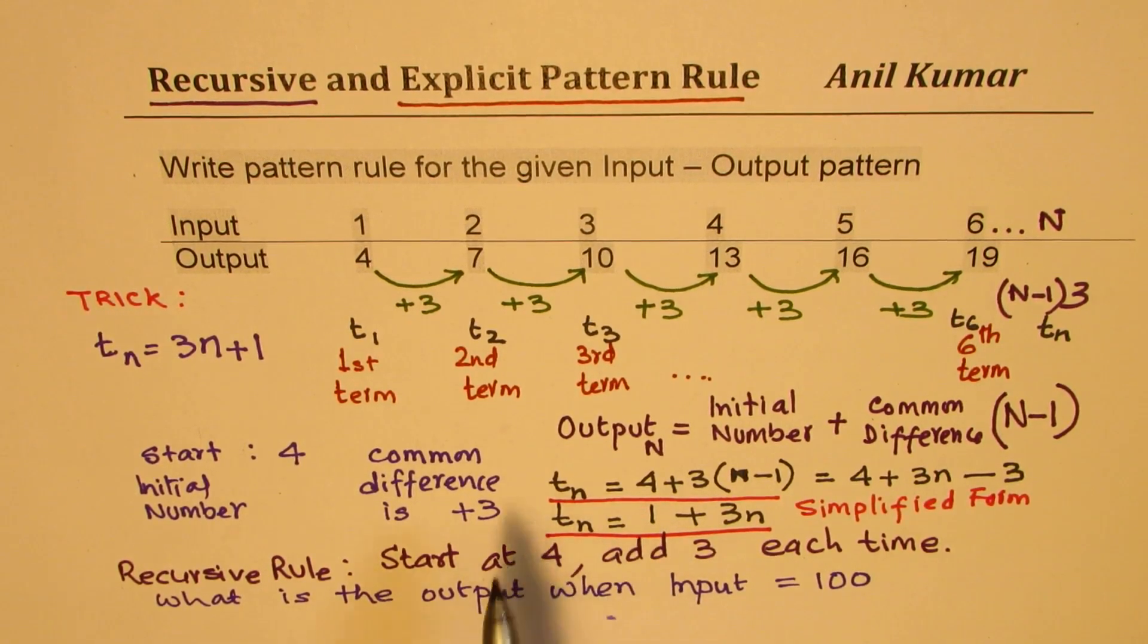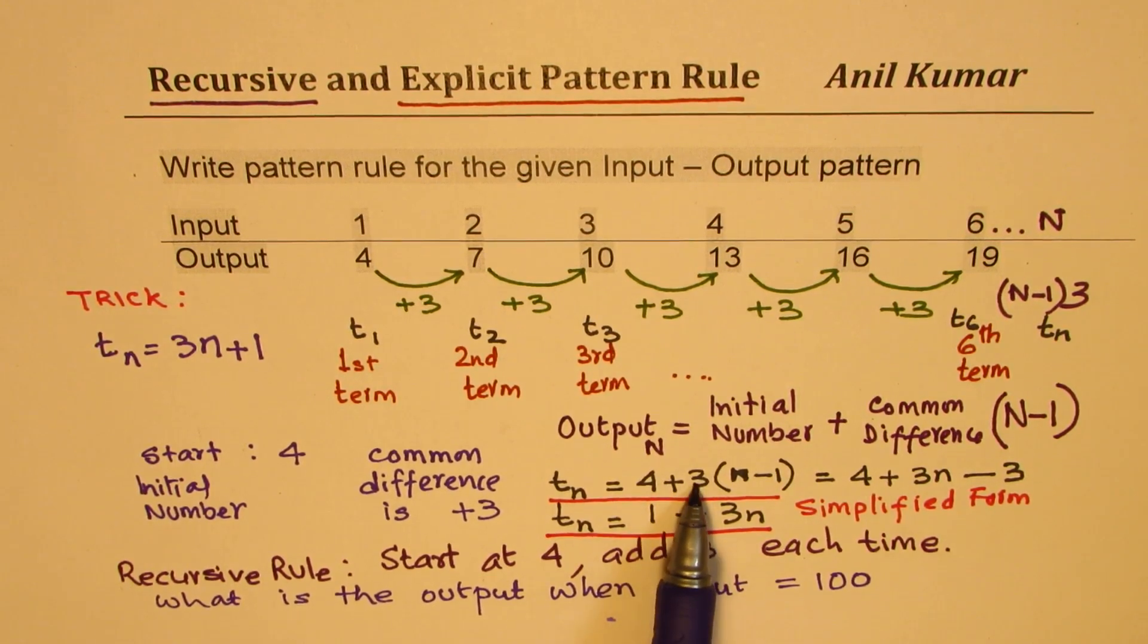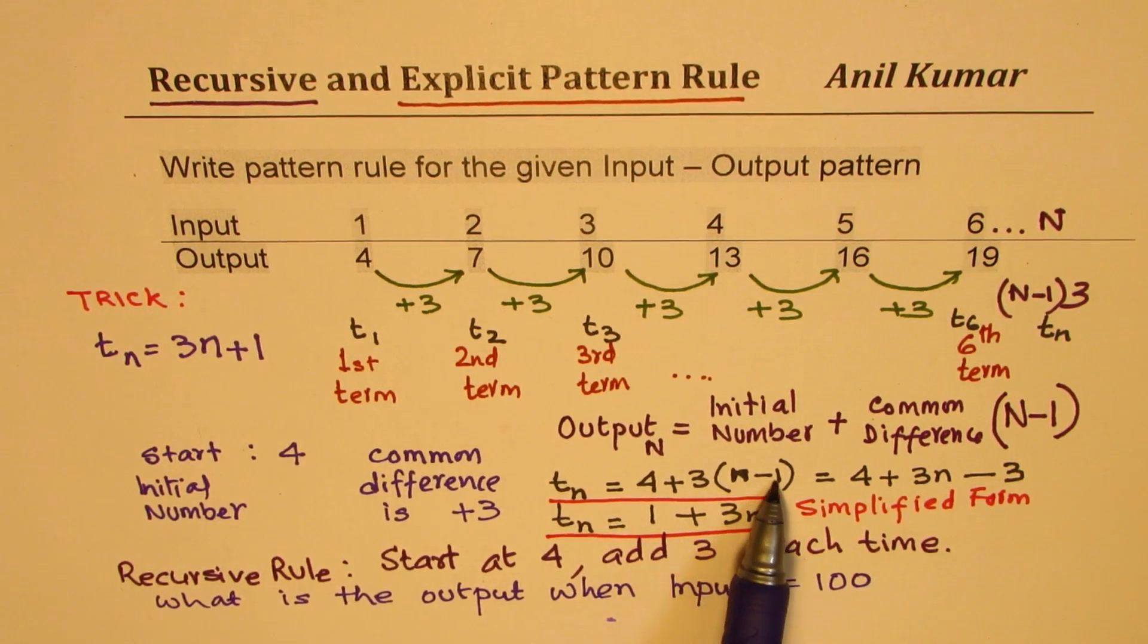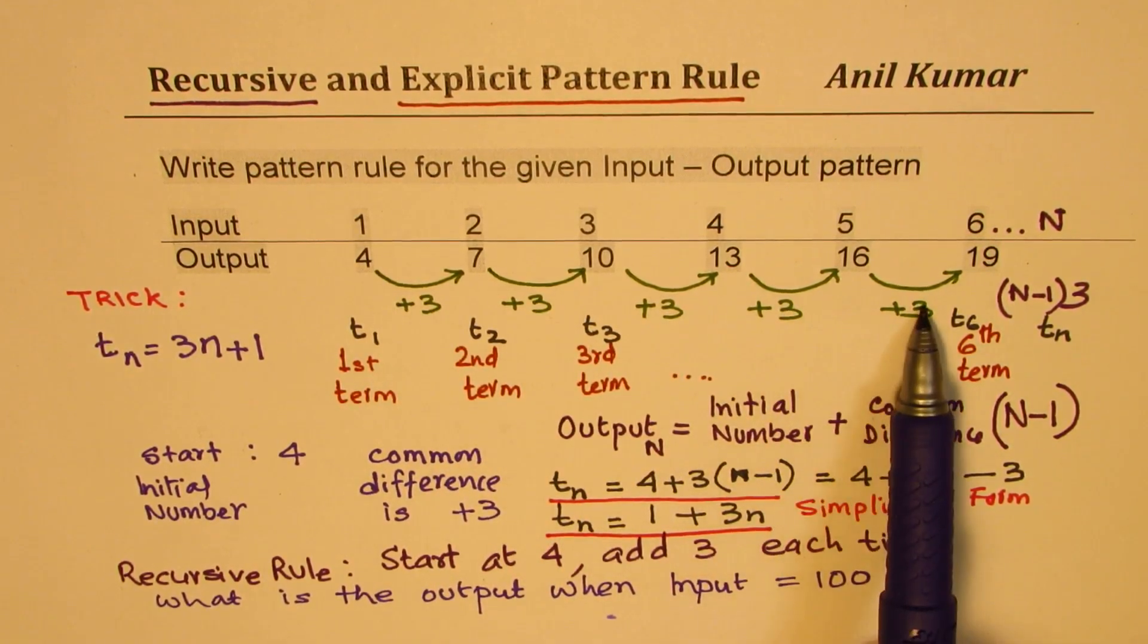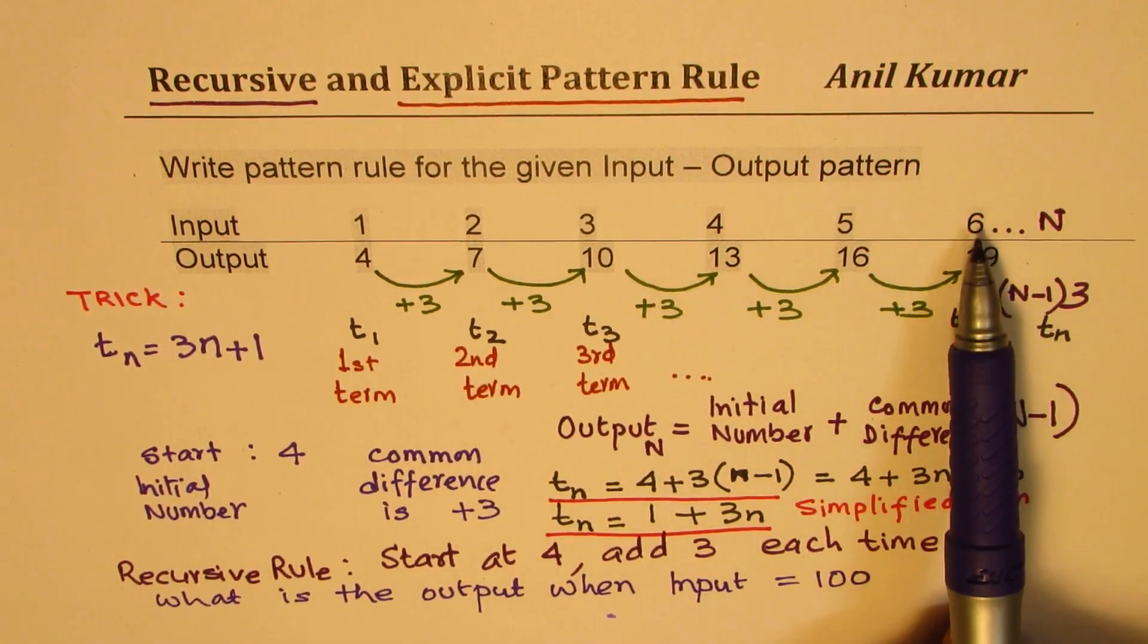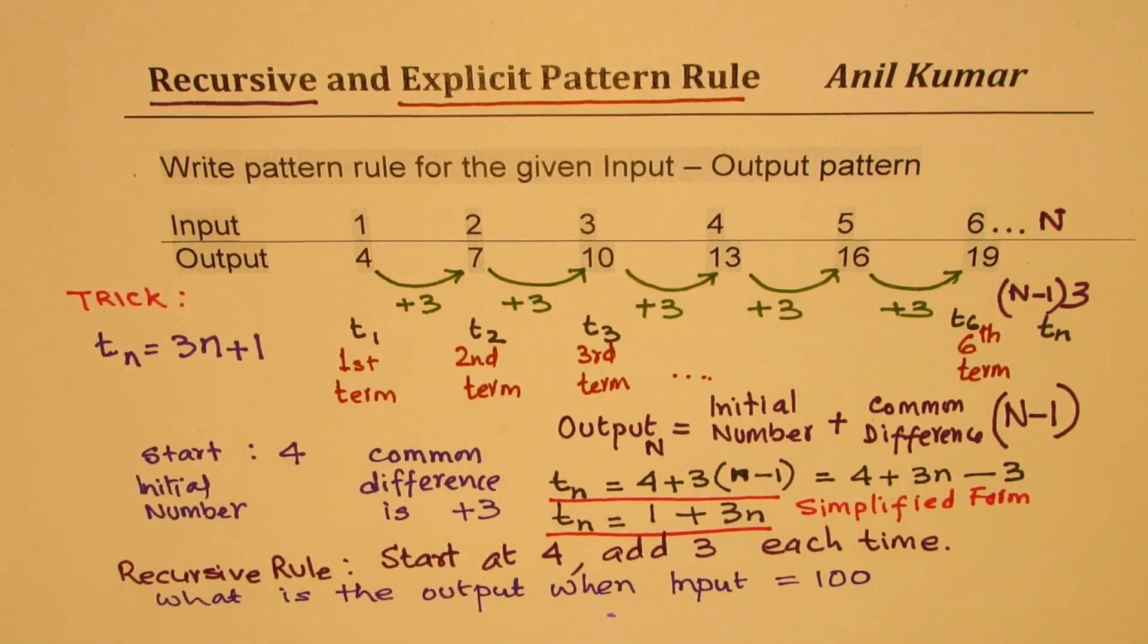But the actual way, the way we teach is to write the general term as starting term or the initial term plus common difference times n minus 1. Because 1 less number of times 3 was added. To get to the sixth term, we added 5 threes. Correct?